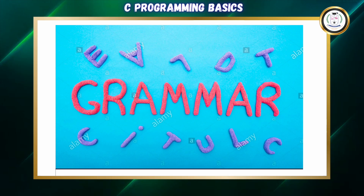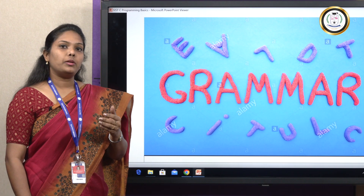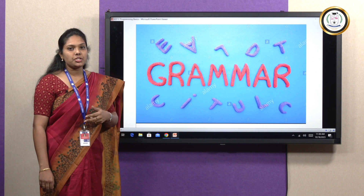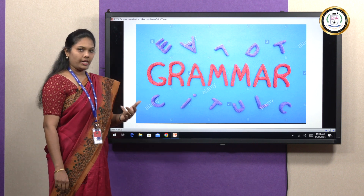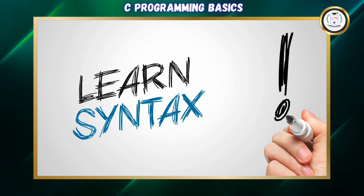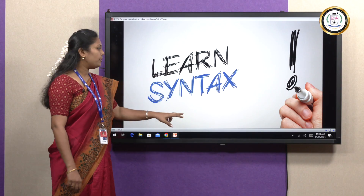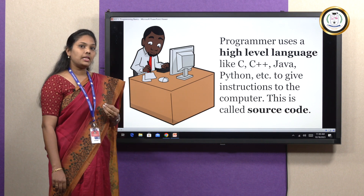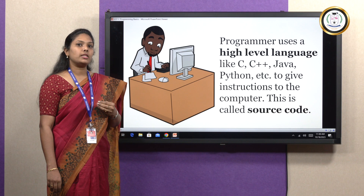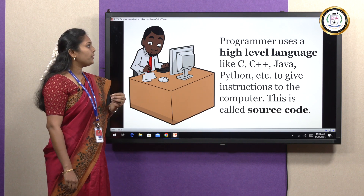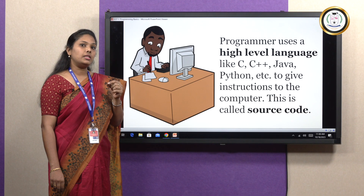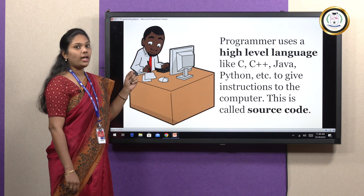Whenever we use a language, we have to use proper grammar to communicate efficiently, which will not lead to any misinterpretation or misunderstanding. Like English has grammar, programming languages also have grammar, which is called syntax. All programming languages have their own syntax. So when a programmer writes a program in C, he has to learn the syntax of C. If coding in Java, he needs to learn Java's syntax, and so on for all high-level programming languages.